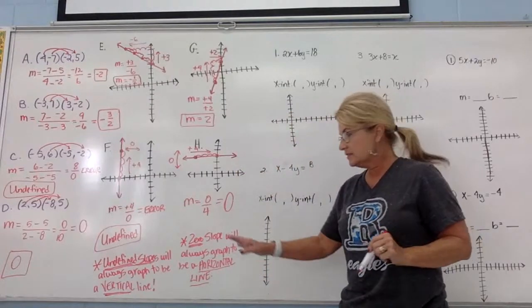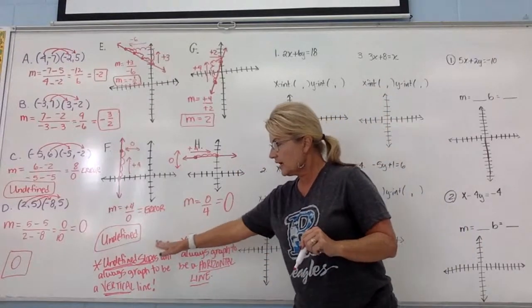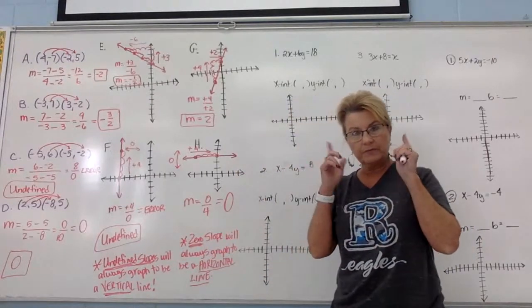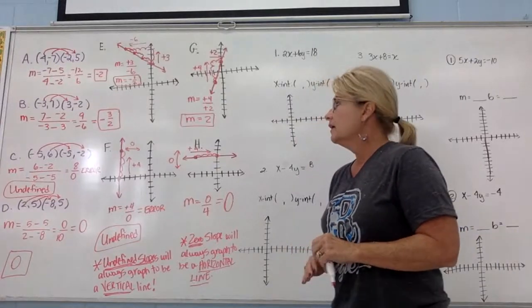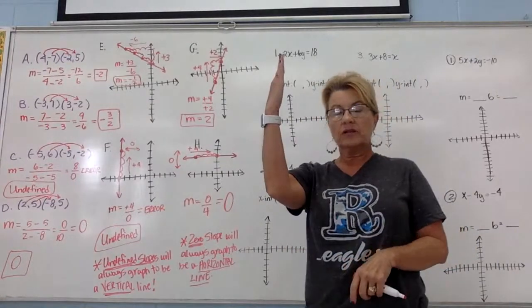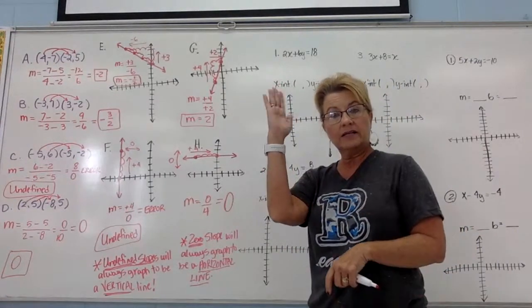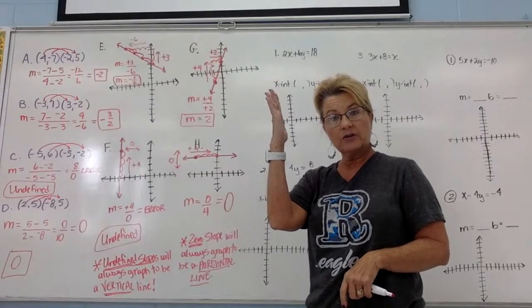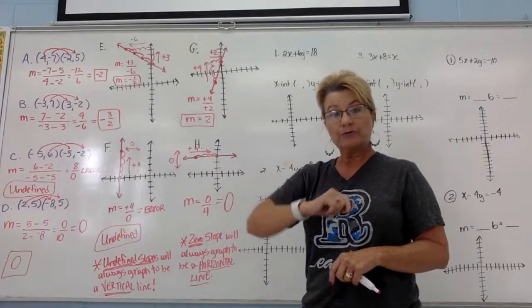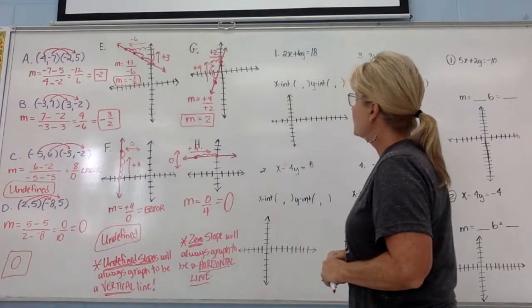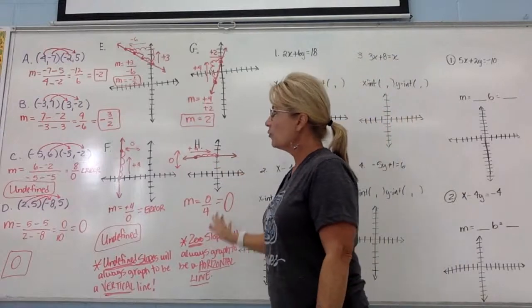To summarize: a vertical line has an undefined slope; a horizontal line has a zero slope.